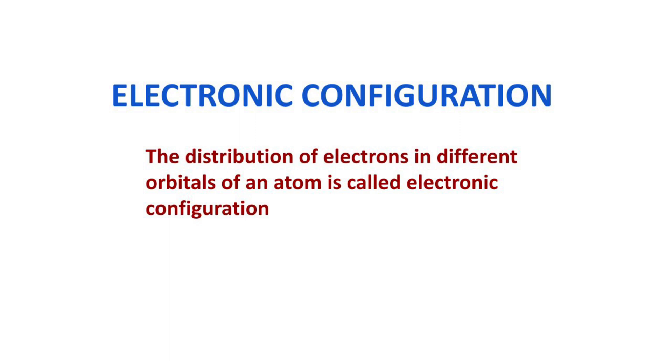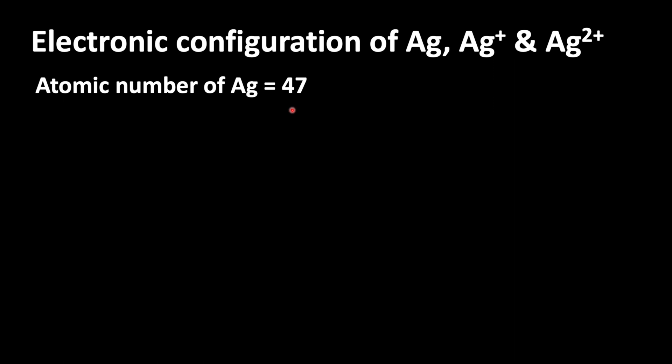The distribution of electrons in different orbitals of an atom is called electronic configuration. To write electronic configuration we should know that atomic number of silver is 47. From that we can write the electronic configuration.